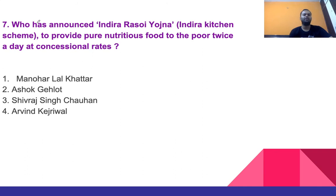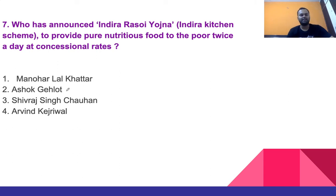Question 7: Who announced the Indra Rasoi Yojana (Indira Kitchen scheme) to provide pure nutritious food to the poor twice a day at concessional rates? Options: Manohar Lal Khattar, Ashok Gehlot, Shivraj Singh Chauhan, or Arvind Kejriwal. The right answer is Ashok Gehlot.